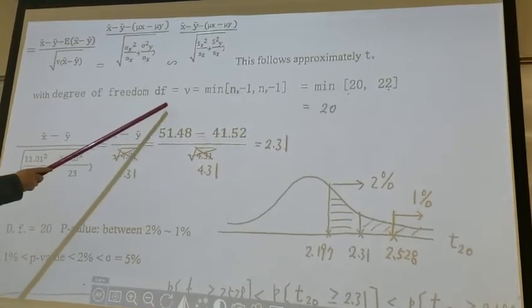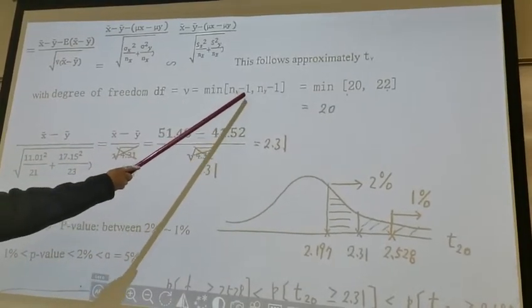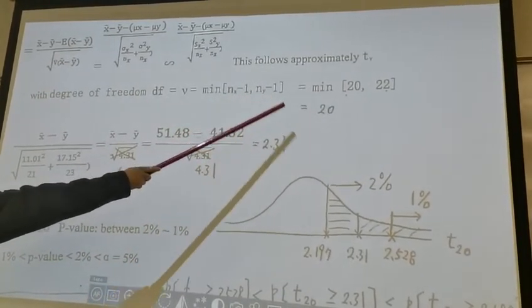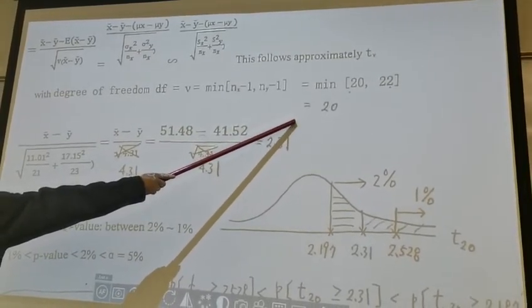And with degree of freedom equal to what? Minimum of nx minus 1, ny minus 1. In our case, we use a simple one. We get degree of freedom equal to 20.